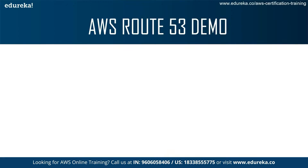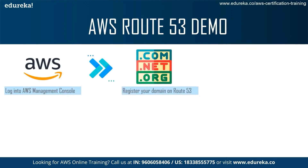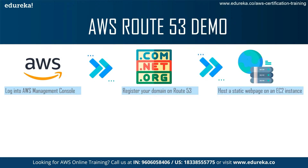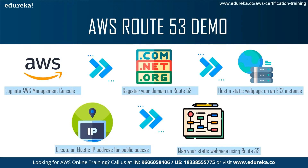What we learned from the demo: how Route 53 works — first log into the management console, then register your domain on Route 53 (either .com, .net, .org, .in, or a free domain integrated with AWS Route 53). Then host a static web page on an EC2 instance such as T2 Micro for Ubuntu. Use PuTTY to access the instance you created on EC2. Create an elastic IP address for the public to access your domain. And finally, map your web page using Route 53.